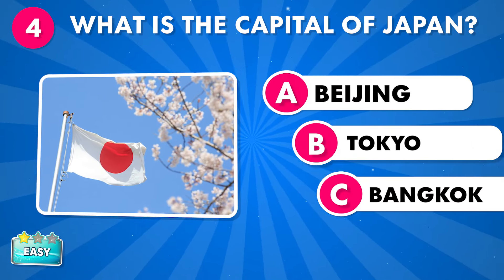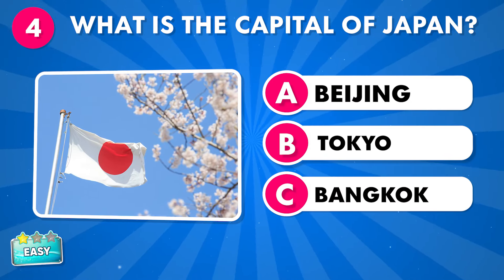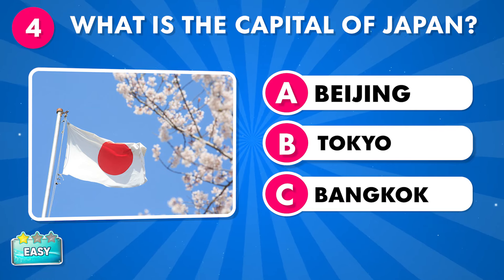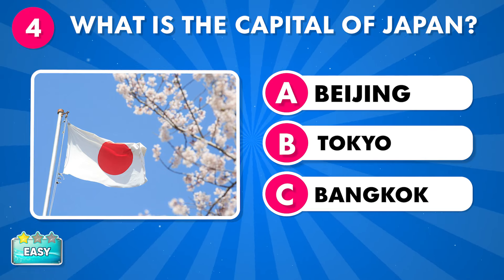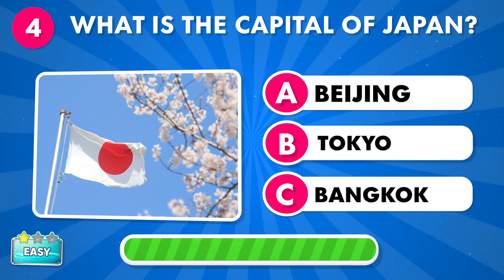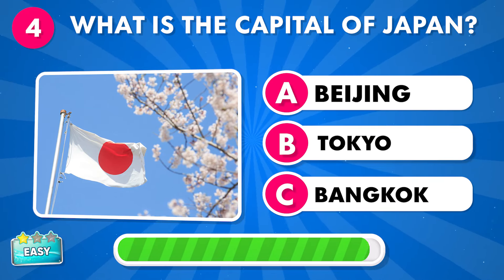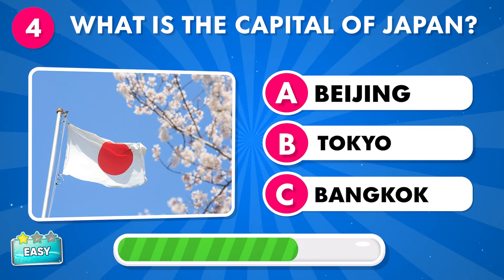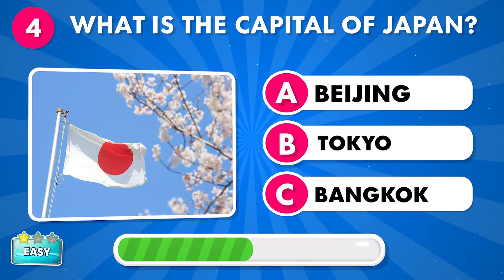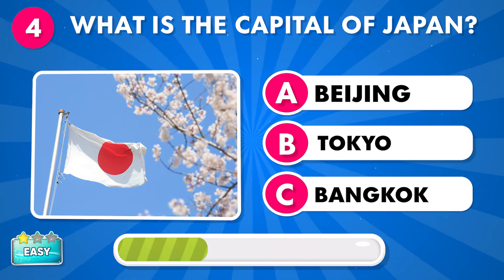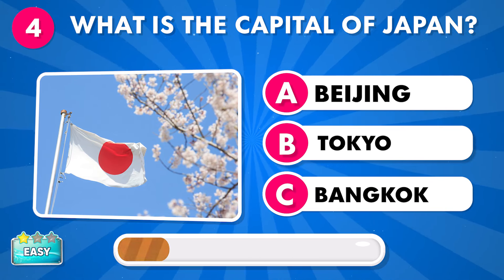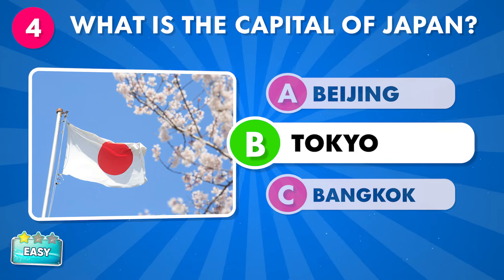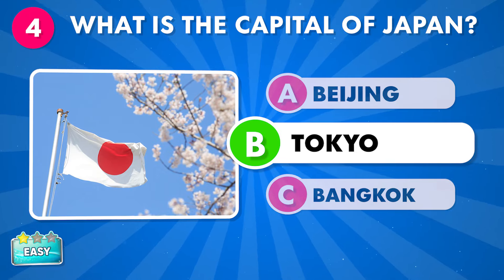What is the capital of Japan? A: Beijing, B: Tokyo, C: Bangkok. It's Tokyo.